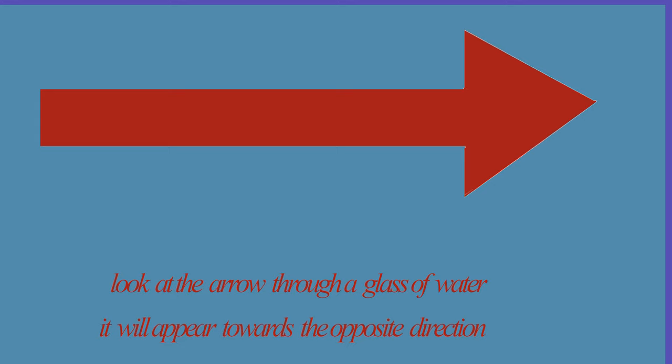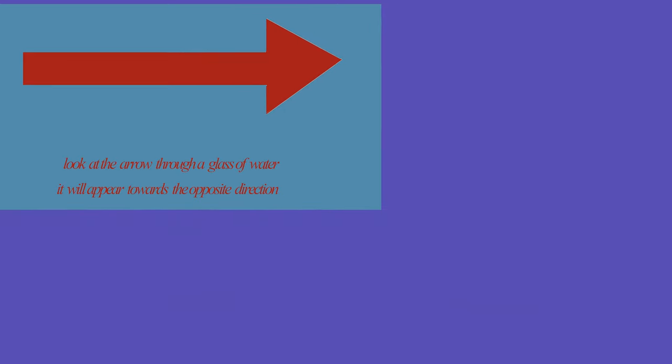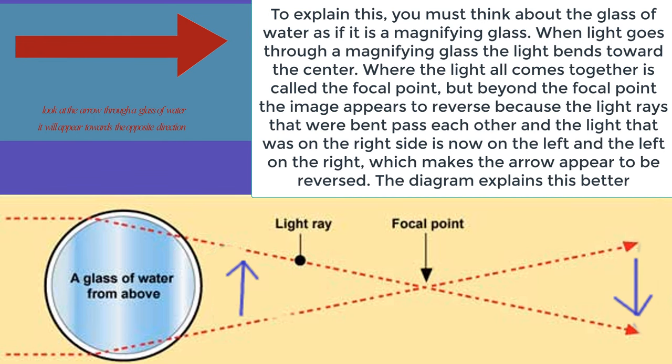Look at the arrow through a glass of water. It will appear towards the opposite direction. To explain this, you must think about the glass of water as if it is a magnifying glass. When light goes through a magnifying glass the light bends toward the center. Where the light all comes together is called the focal point. But beyond the focal point the image appears to reverse because the light rays that were bent past each other and the light that was on the right side is now on the left and the left on the right, which makes the arrow appear to be reversed. The diagram explains this better.